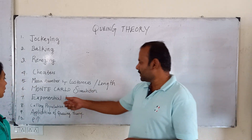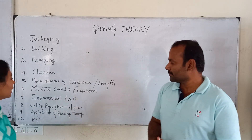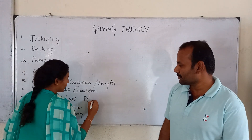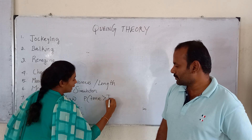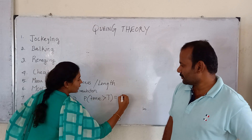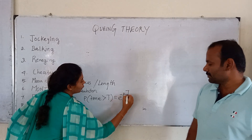What is meant by exponential law? Exponential law is the probability that time greater than t is equal to e to the power of negative mu t. This is exponential law.